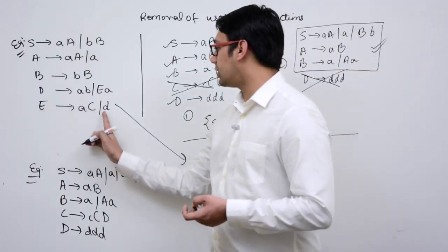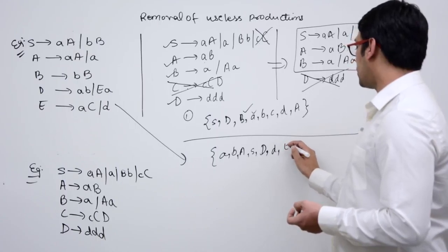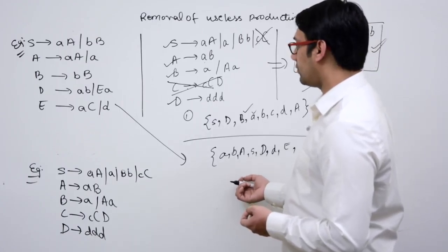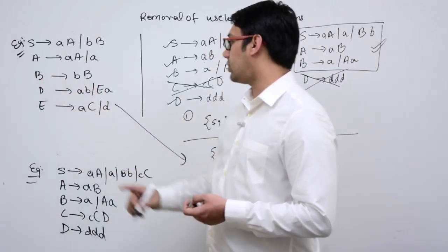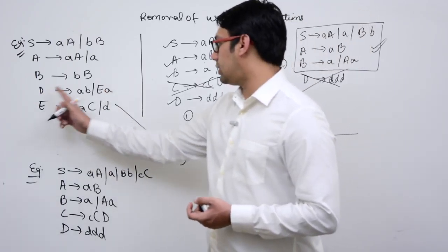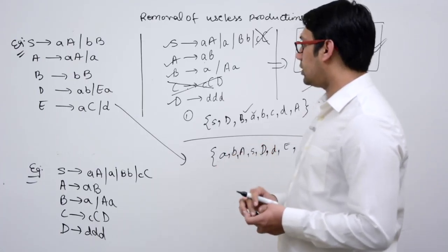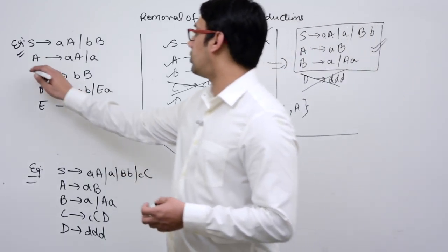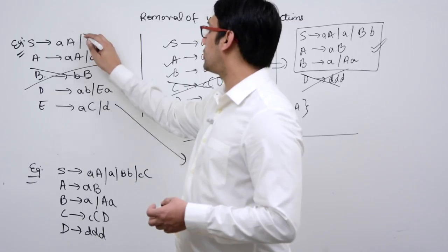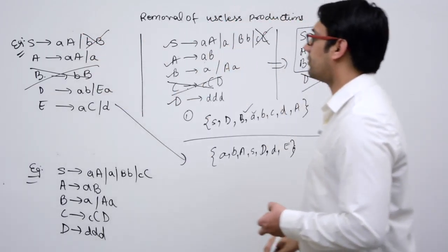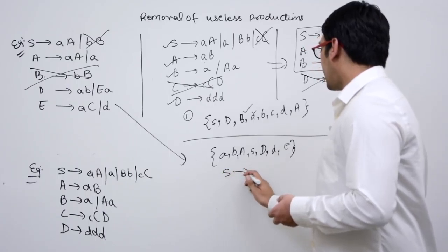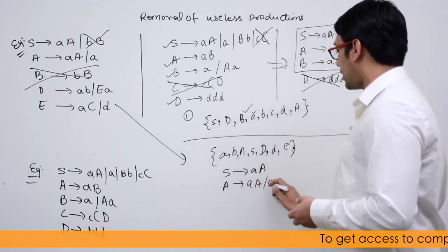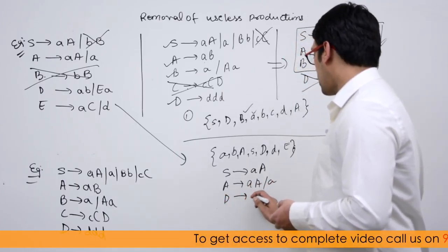E is directly generating a terminal, so E is also useful. B is generating something, but B is not proven to be useful because not all symbols on its right-hand side are proven useful yet. So the production involving B is not useful at all — delete any reference to it.